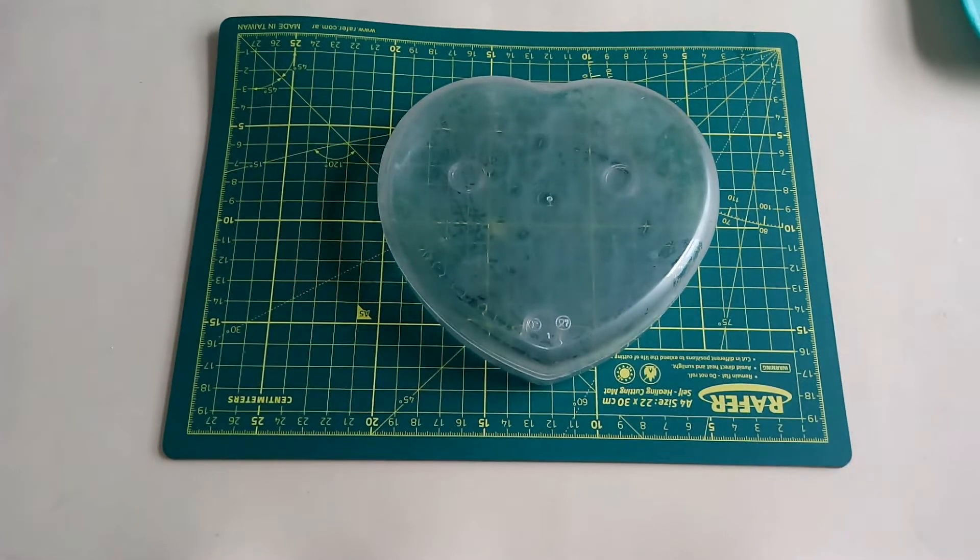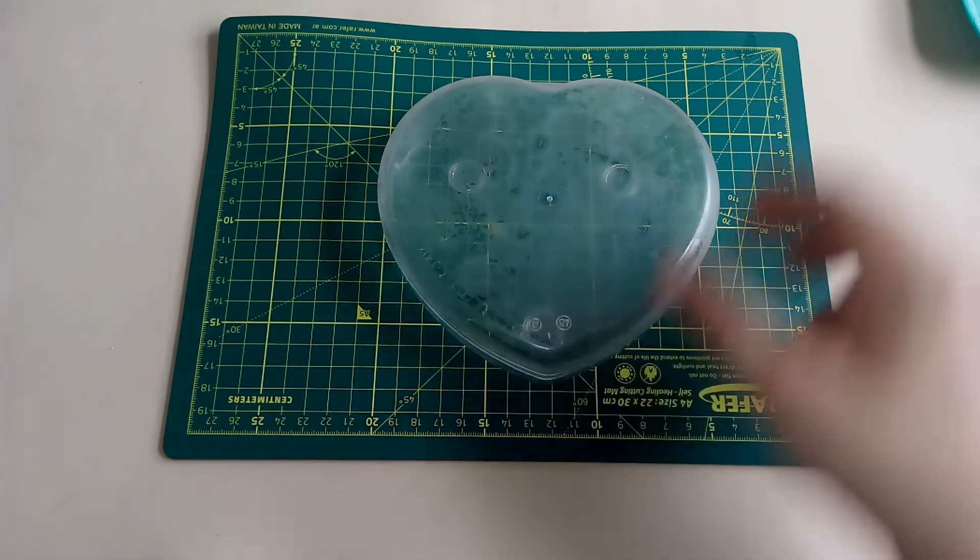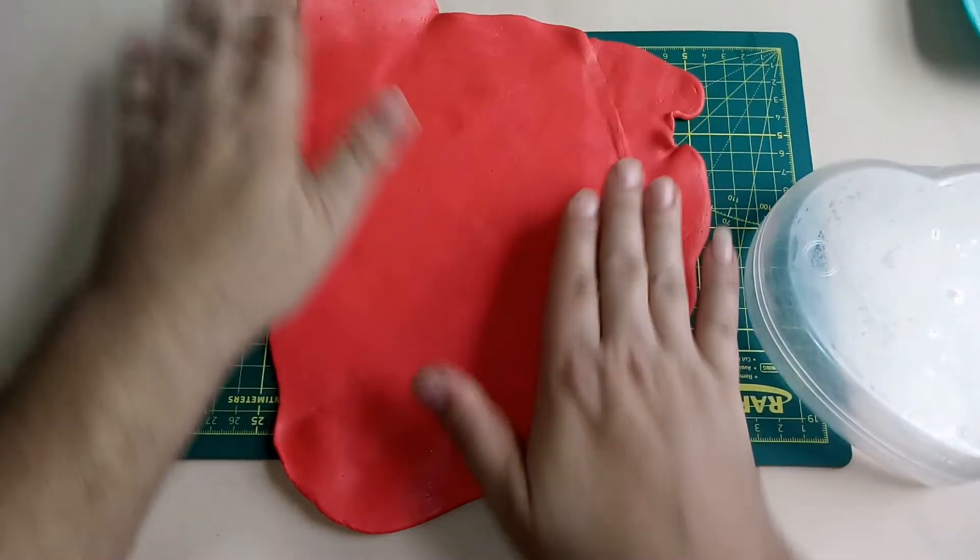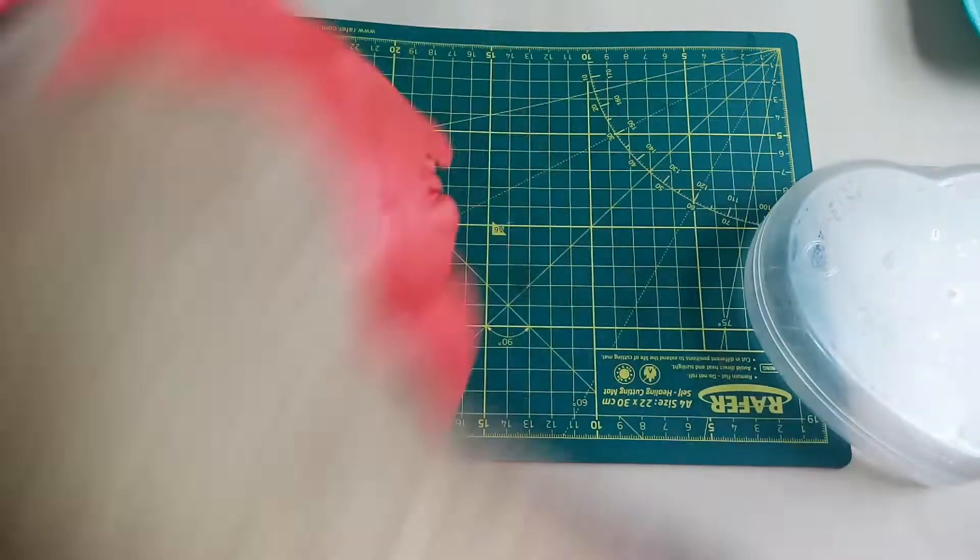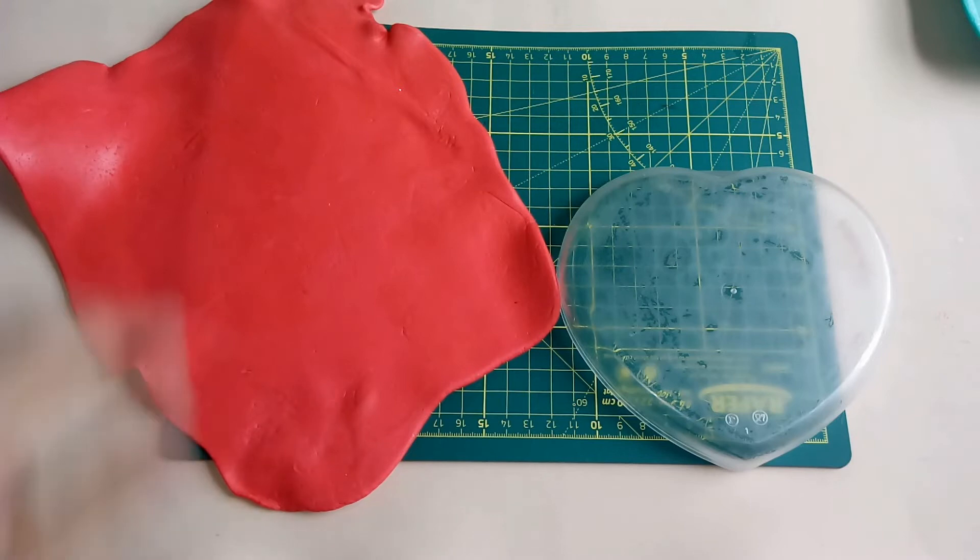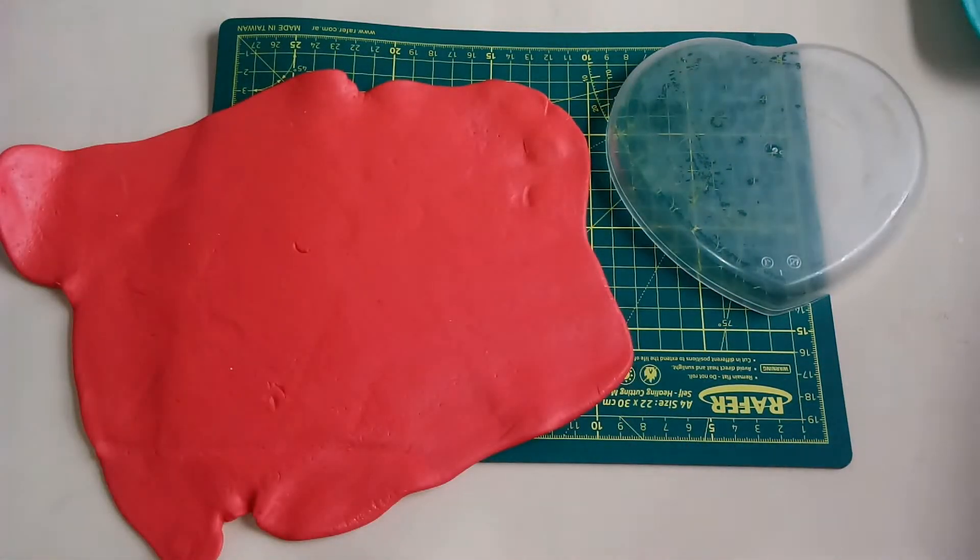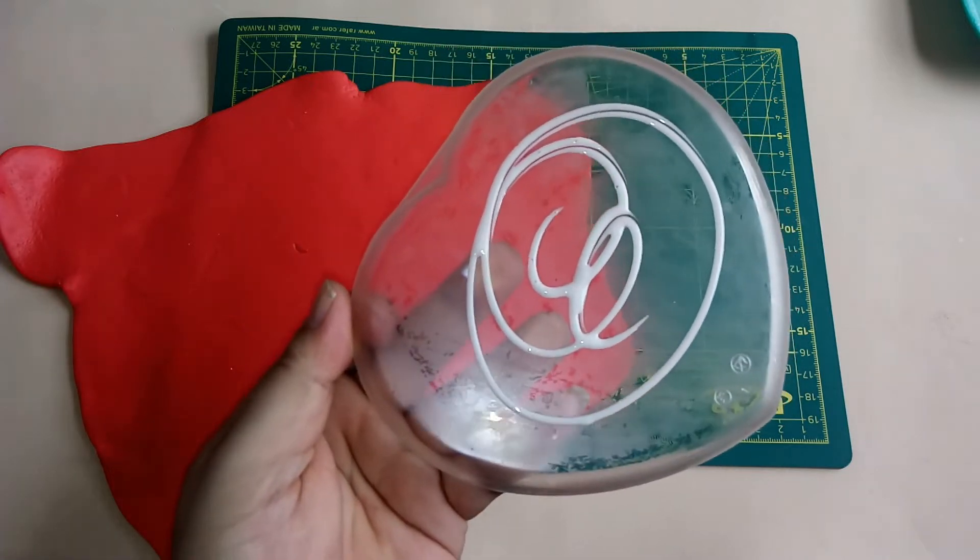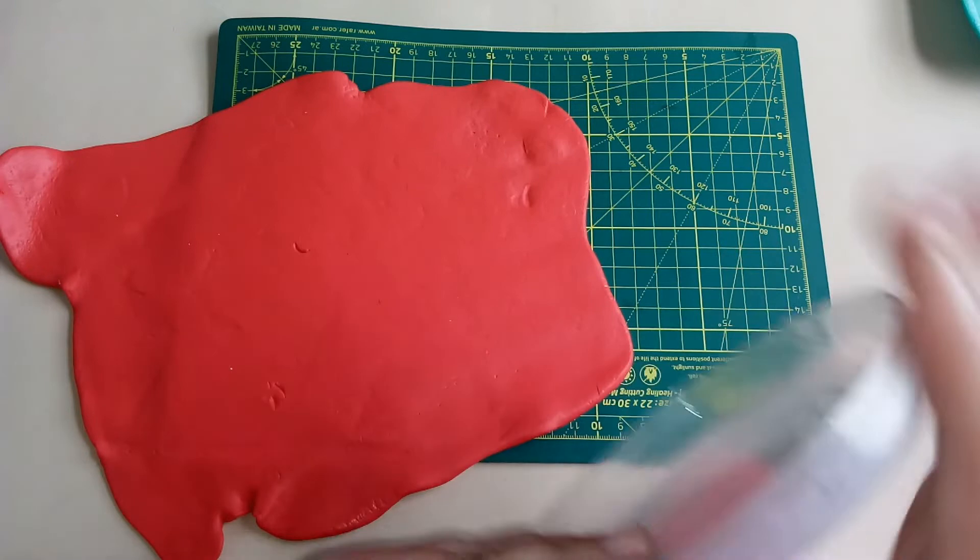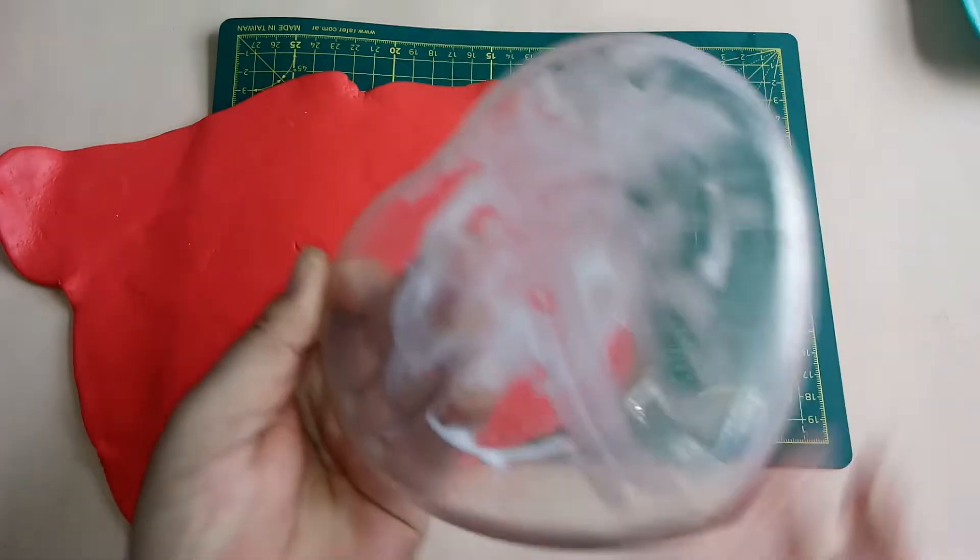Vamos a estirar masa de color rojo. Elegí el color rojo porque me gusta y porque me parece que queda muy bien con un corazón. Voy a trabajar en la tapa. Lo que voy a hacer es aplicar nuevamente cola vinílica. Aplico ahí, estiro, que cubra bien todo, principalmente los laterales donde quiero que quede bien agarrada la porcelana.